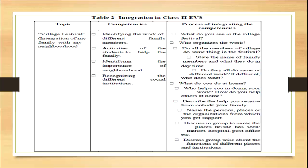The process of integrating the competencies can be done by asking a few questions or doing certain activities. For example, we can ask: What do you see in the village festival? Who organizes the work? Do all the members of the village do the same thing in the festival? State the name of the family member and what they do in the daytime. Do all do same or different work? If different, who does what? What do you do at home? Who helps you in doing your work? How do you help others at home? Describe the help you receive from outside your family. Discuss in a group.